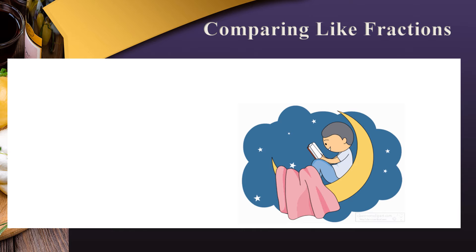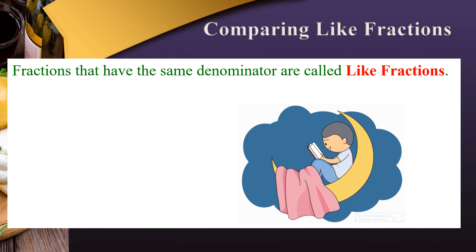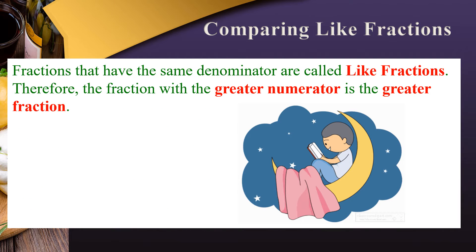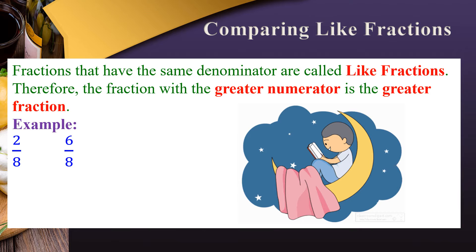Comparing Like Fractions: Fractions that have the same denominators are called Like Fractions. Therefore, the fraction with the greater numerator is the greater fraction. For example, let us consider two fractions 2/8 and 6/8. Here, the denominators are the same, so we need to compare the numerators.